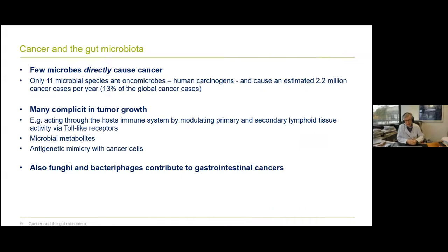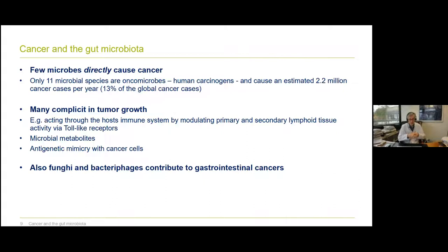There are a few microbes that directly cause cancer. Only 11 microbial species are truly oncomicrobes — human carcinogens — but they cause an estimated 2.2 million cancer cases per year, 13% of global cancer cases. For example, Helicobacter pylori is one of these oncomicrobes. But the majority of bugs are complicit in tumor growth — they act through the host immune system, modulate primary and secondary lymphoid tissues, produce metabolites that act on cancer, and cause antigenic mimicry with cancer cells. Not only bacteria, but also fungi and bacteriophages contribute to gastrointestinal cancers.